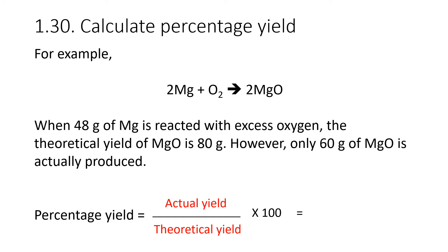This is best illustrated with an example. Here, we've got magnesium reacting with oxygen according to this equation. When 48 grams of magnesium is reacted with excess oxygen, the theoretical yield of magnesium oxide is 80 grams. We calculated this in the previous video. So if everything goes perfectly in this reaction, if all of the magnesium reacts properly with the oxygen, we should get 80 grams of magnesium oxide.